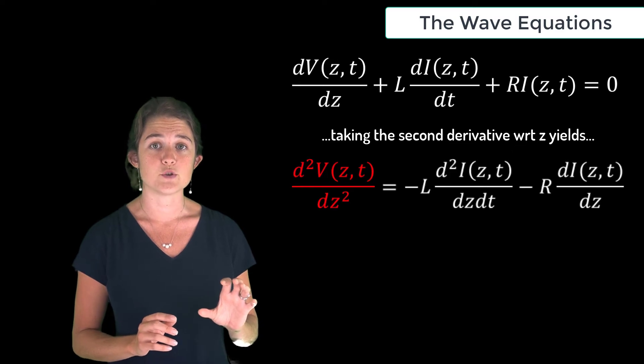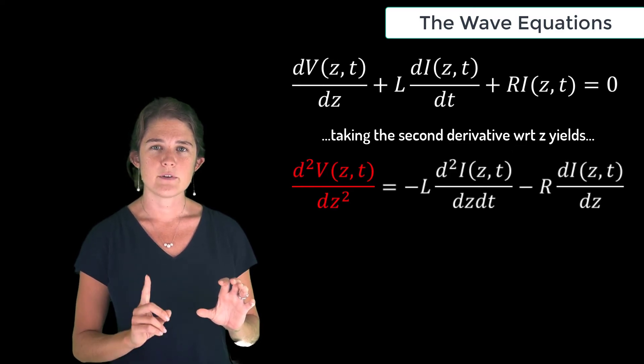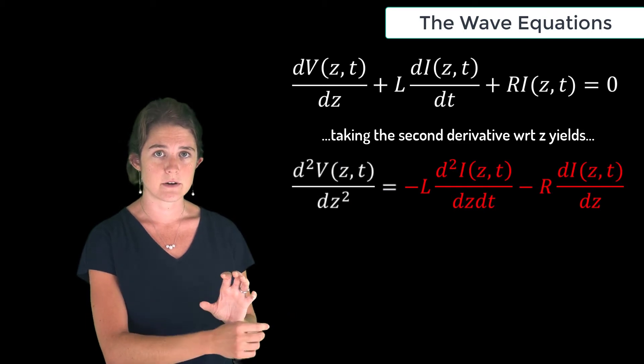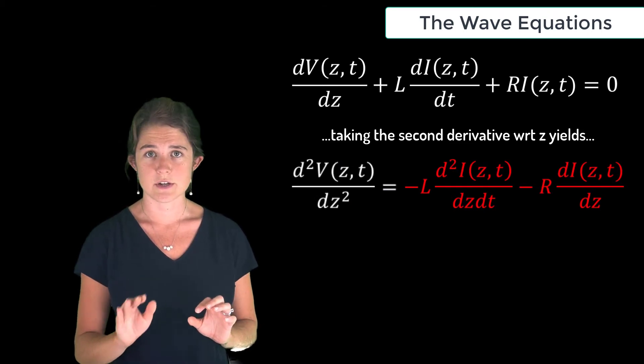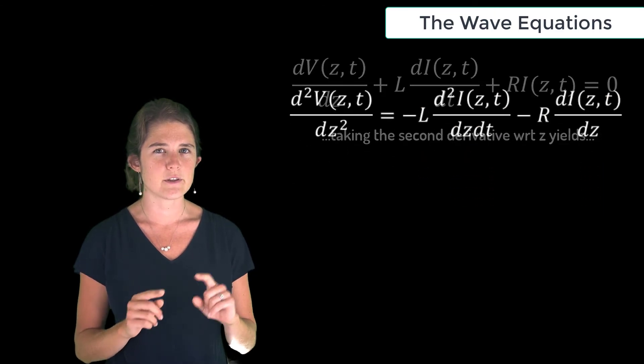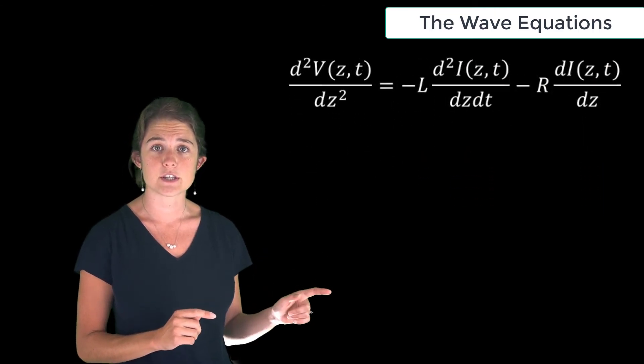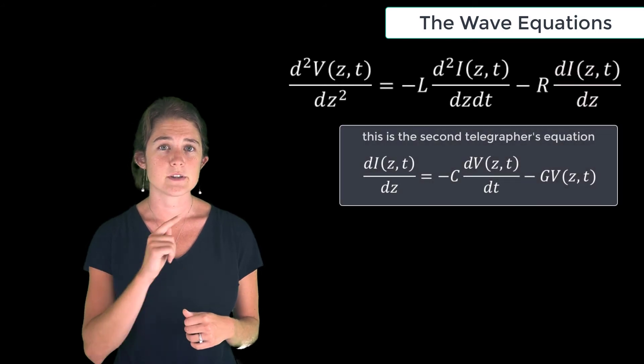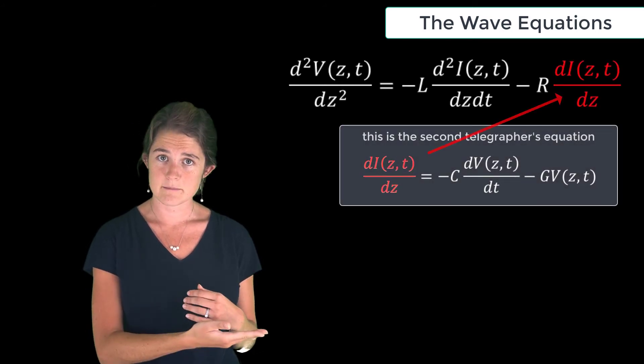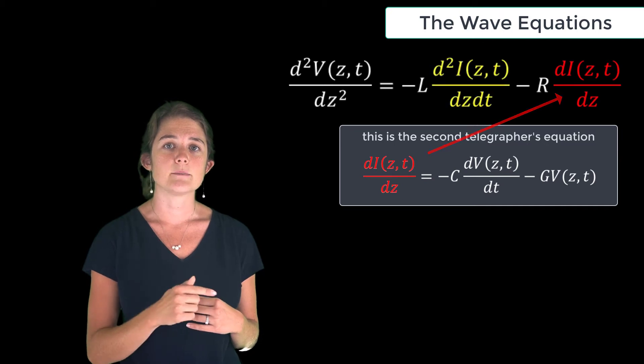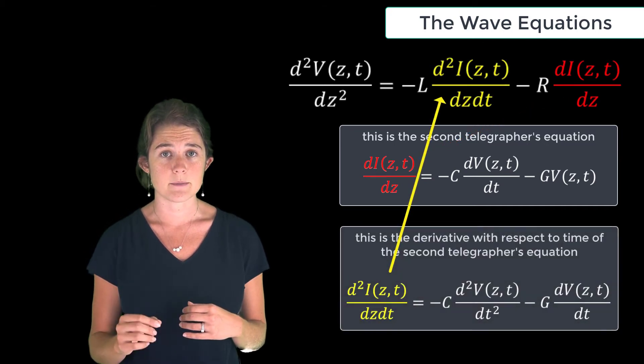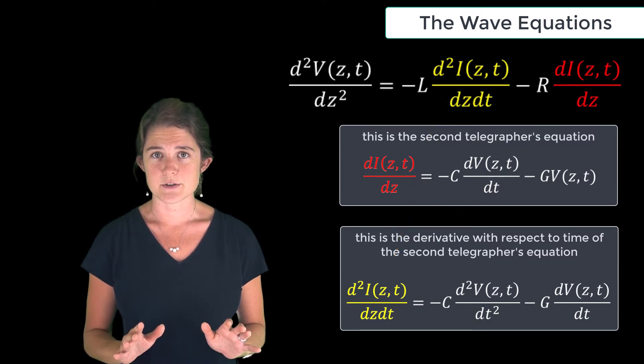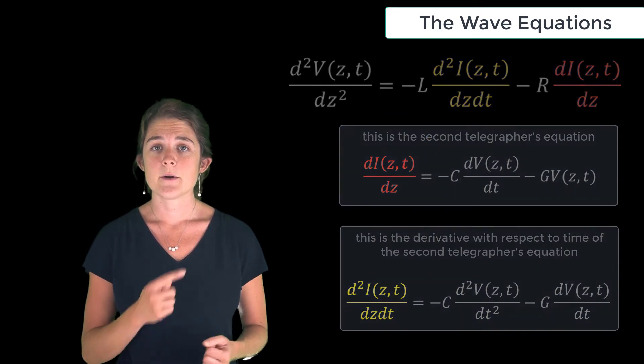However, the right hand side of the equation involves derivatives of current, which the voltage wave equation shouldn't have. Notice though that we can convert these to voltage expressions using the second telegraphers equation. First, this term can be converted directly, and this term can be converted using the derivative with respect to time of the second telegraphers equation. If we make these substitutions and collect like terms, this is our final expression of the wave equation for voltage.